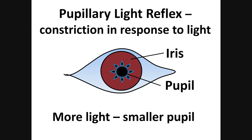The pupils constrict in response to light — in a way it makes sense: more light, smaller pupils. This reaction is called the pupillary light reflex. When we check this reflex, it's not just the eyes but all parts of the reflex arc.